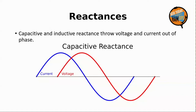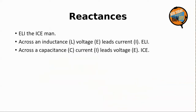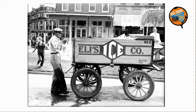For a very long time, electronics students have memorized these phase relationships with the immortal phrase, 'ELI the ICEman.' Across an inductance L, voltage E leads current I. Across a capacitance C, current I leads voltage E. ELI the ICEman. And here is an actual photo of Eli himself with his ice wagon. If you look closely, you can see that Eli's ice company was owned by Roy G. Biv, another famous fellow in the world of electronics.